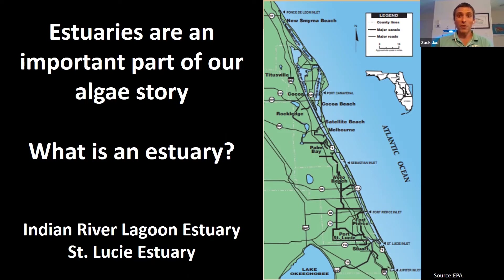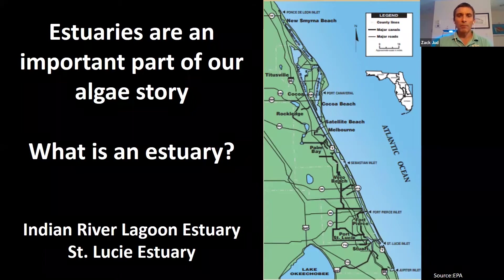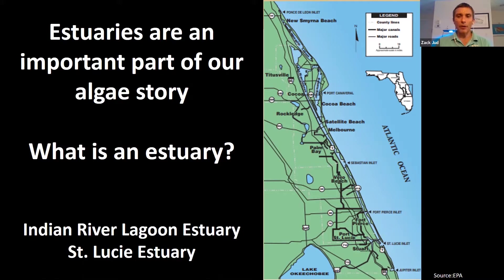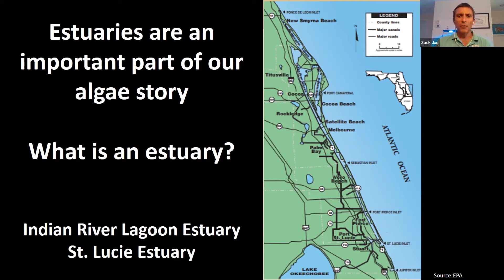An estuary is a place where freshwater and saltwater mix together, so the water is generally brackish — not as fresh as rivers and not as salty as the ocean. In our area, we have two important estuaries. First is the St. Lucie Estuary, which is what's called a flooded river-mouth estuary — essentially a place where a river flows into the sea. This is the most common type of estuary; think about Chesapeake Bay, just on a much smaller scale.